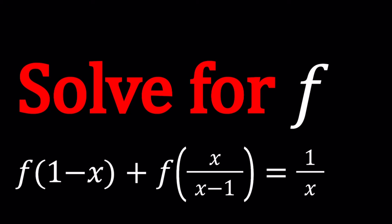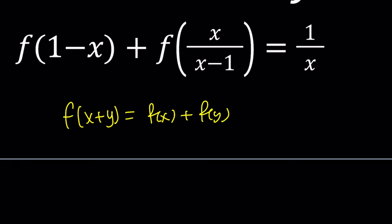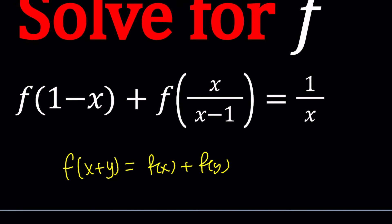Usually we use substitution to solve these kinds of functional equations. We only have a single variable so we have to come up with more equations so we can cancel something out. Some functional equations contain more than one variable, such as f of x plus y equals f of x plus f of y — hopefully you know Cauchy's functional equations. But this one is pretty different because this function may not be something you can easily guess and check.